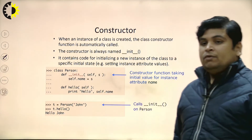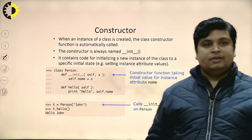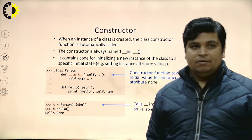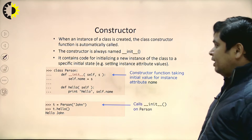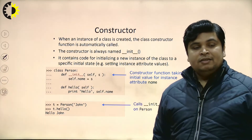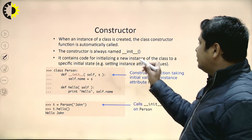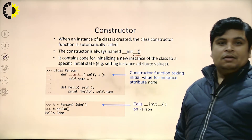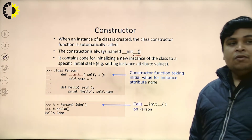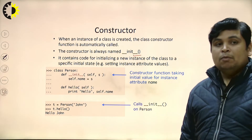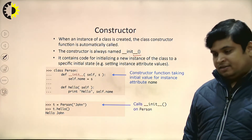It means when you want to initialize something at the time of object creation, then constructor plays a very vital role. In Python, a constructor is always named by the double underscore init double underscore. It contains code for initializing a new object of the class to a specific initial state.